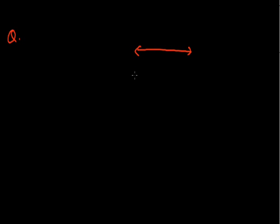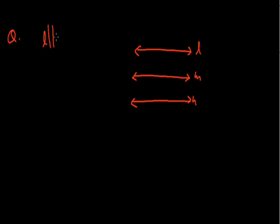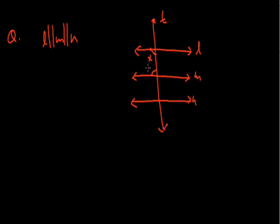The next question is: we have three lines, L, M, and N, which are parallel to each other. Line L is parallel to M, and line M is parallel to N, so all three lines are parallel to each other. There is a transversal T which intersects these three lines. The angle at L is X, the angle at M is Y, and the angle at N is Z.